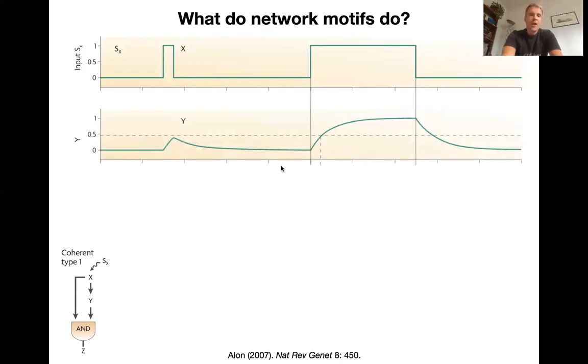So if you imagine, X will immediately try to activate Z, but it can only do that through Y if it signals through Y as well. So it needs to activate Y first. And so if you have a very short pulse of X, there is a gradual buildup of Y, but it never reaches the threshold that it needs to activate Z. So that's the idea. So this short pulse is filtered out and only a sustained pulse will build up enough Y to get expression of Z.